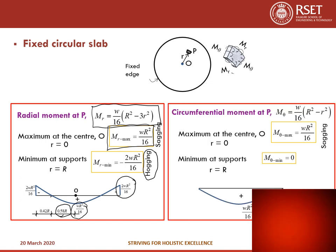For the fixed slab circumferential moment M_theta, the expression is (w/16)(R² - r²). The maximum value at the center is wR²/16 and the minimum value at the support is 0. This variation goes from wR²/16 at center to zero at the support for the circumferential bending moment in the fixed circular slab.